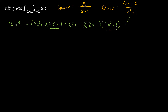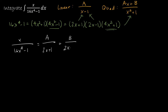We have one quadratic factor and two linear factors. So I'm going to rewrite this as: x over (16x⁴ − 1) equals A over (2x + 1), plus B over (2x − 1), plus (Cx + D) over (4x² + 1).